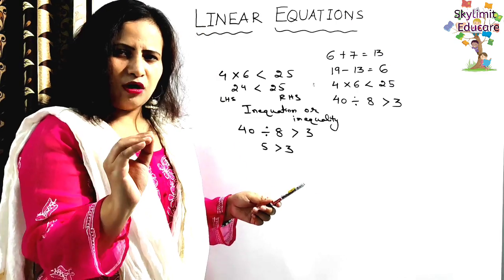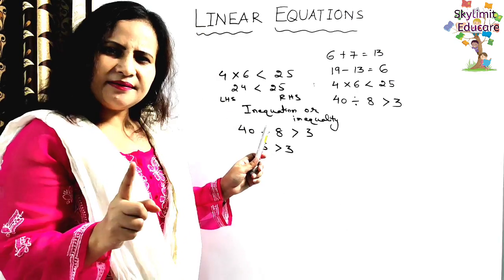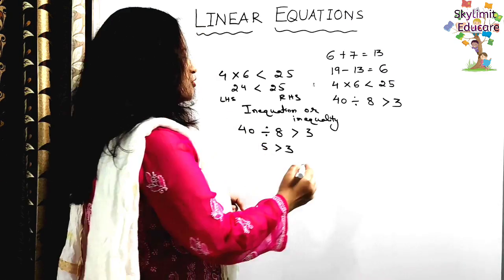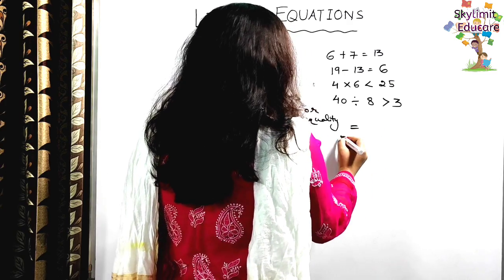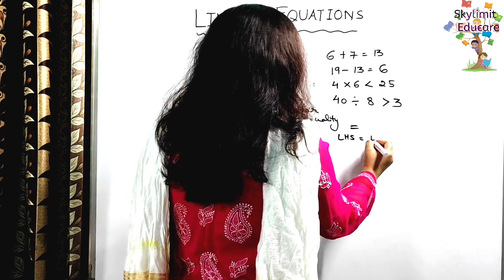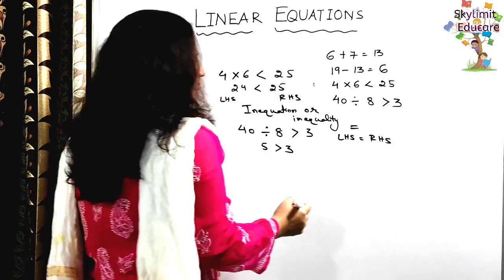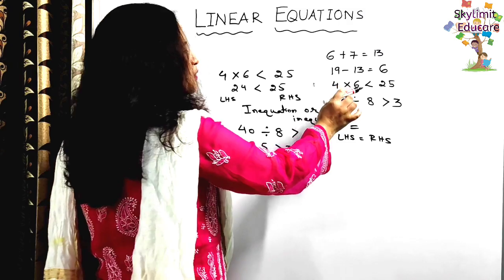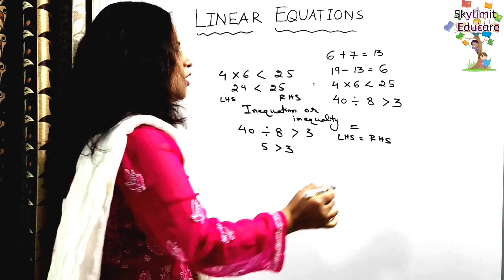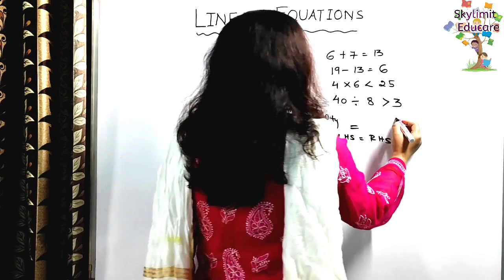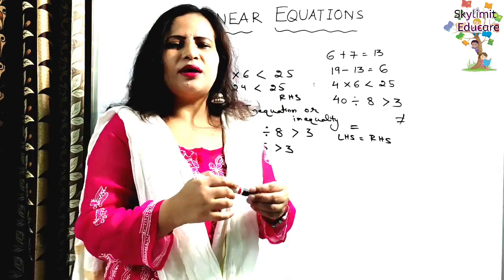Similarly, the fourth statement: 40 divided by 8 is greater than 3. 40 divided by 8 is 5, and 5 is greater than 3. The left-hand side is greater than the right-hand side — both are not equal, so this is not an equation. Whenever you see a less than, greater than, or not equal to sign, it is not an equation.